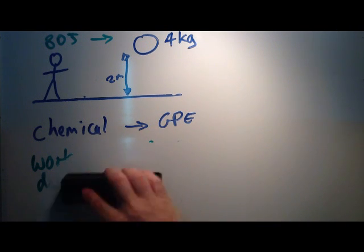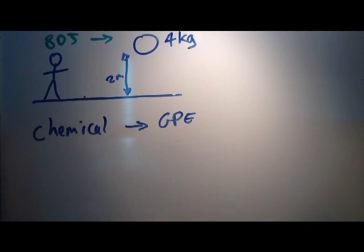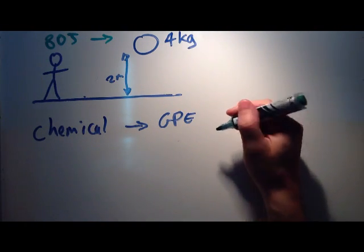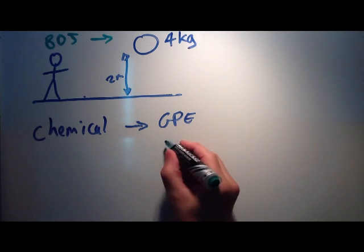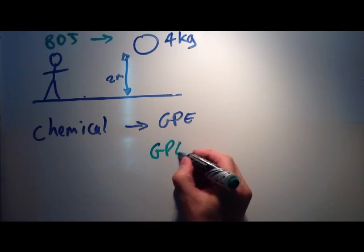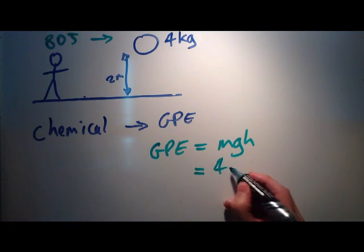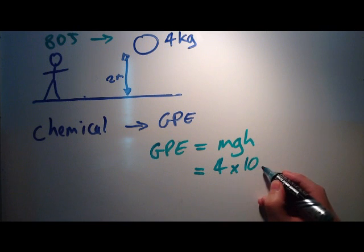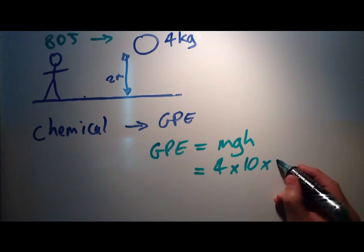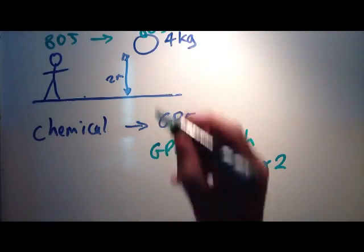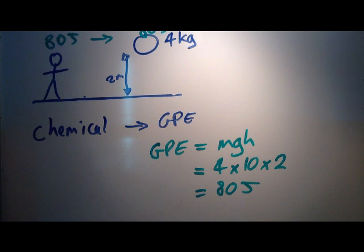Now how much energy has that ball gained? Well, if the person has done 80 joules, and if we assume there's no energy losses, heat or anything else, then let's just check—that ball should hopefully gain 80 joules of GPE as well. We know the formula for GPE is GPE equals MGH. The mass of the ball is 4, we know gravity is 10, and the height the ball has moved up is 2. So 4 times 10 times 2 is 80 joules. So that ball now has 80 joules of gravitational potential energy stored.